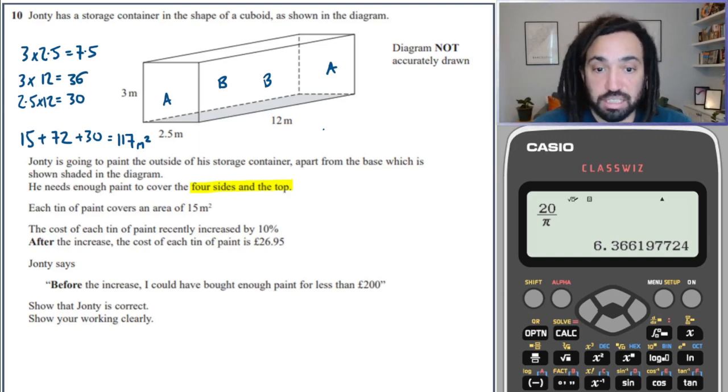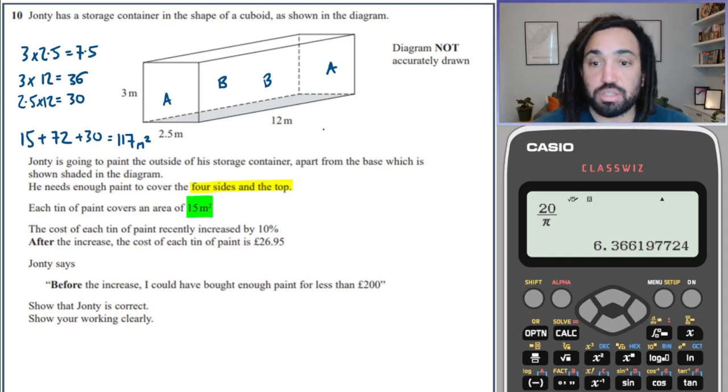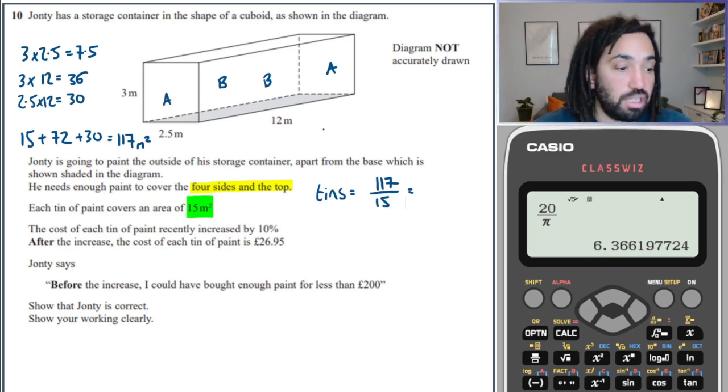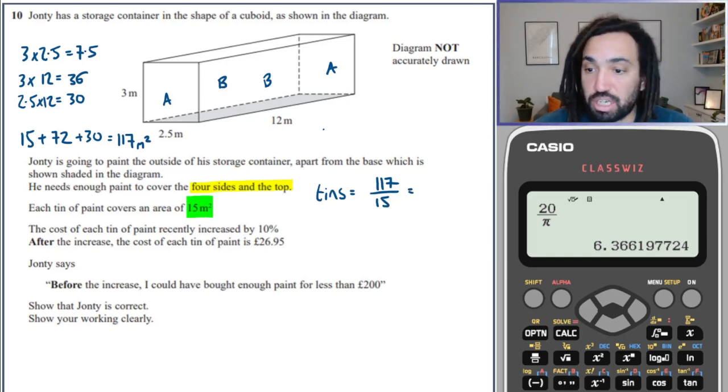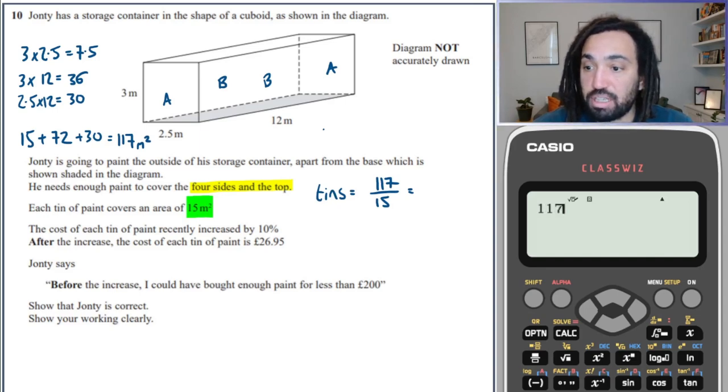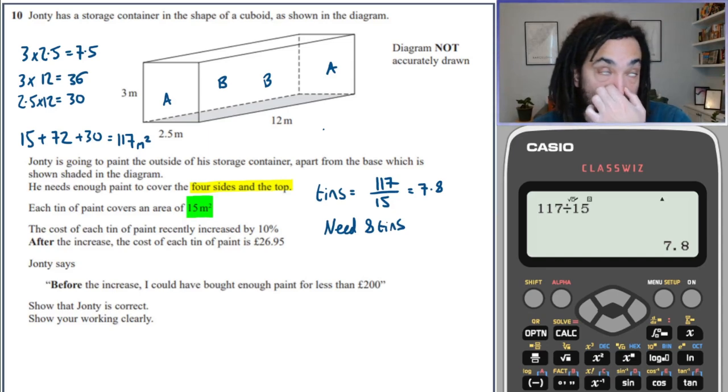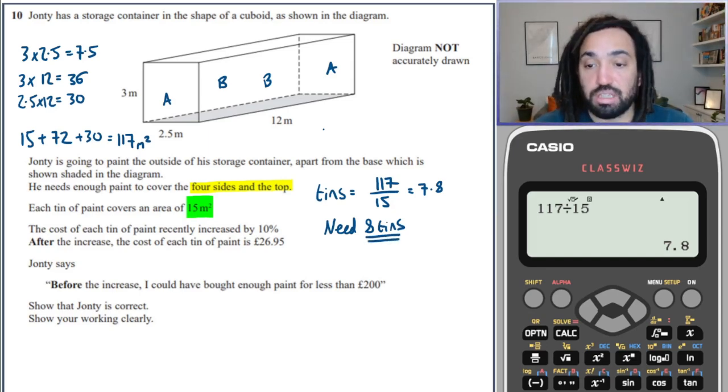So that's the surface area. So it says each tin of paint covers 15 metres squared. So we need to figure out how many tins we need. So the number of tins will be the amount of area we need to cover divided by how much one tin covers. So that is going to be just shy of 8, I believe. So it's going to be 7.8, which means we are going to need 8 tins. Because, of course, you can't just buy an 8th or, sorry, 8 tenths of a tin. You have to buy tins in whole quantities.